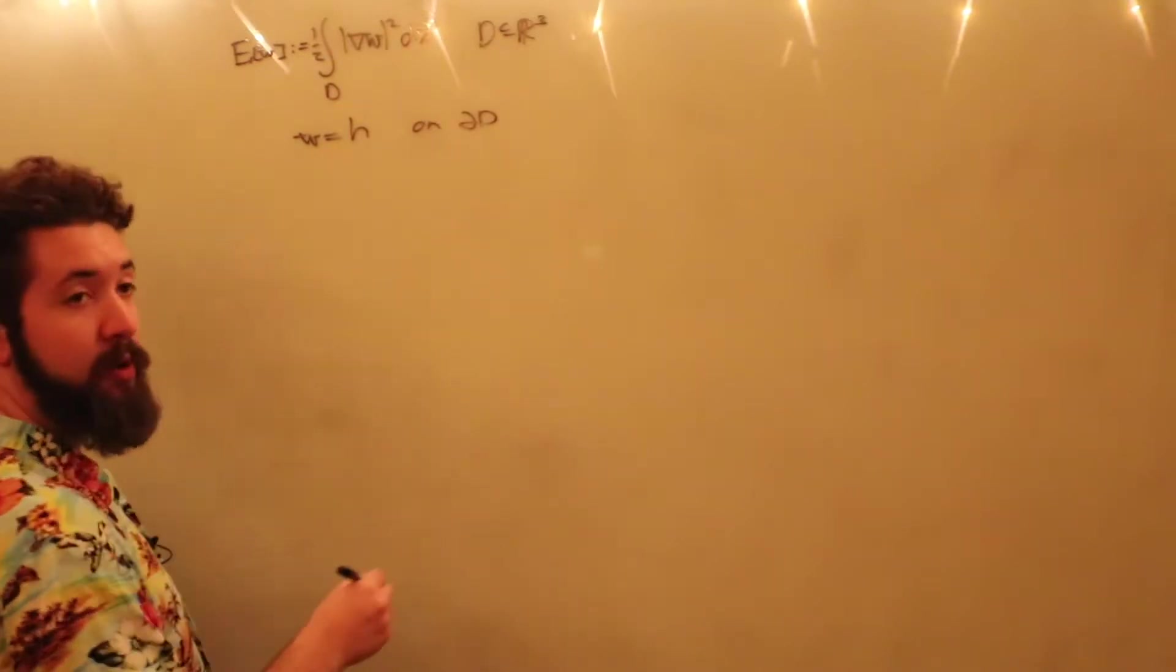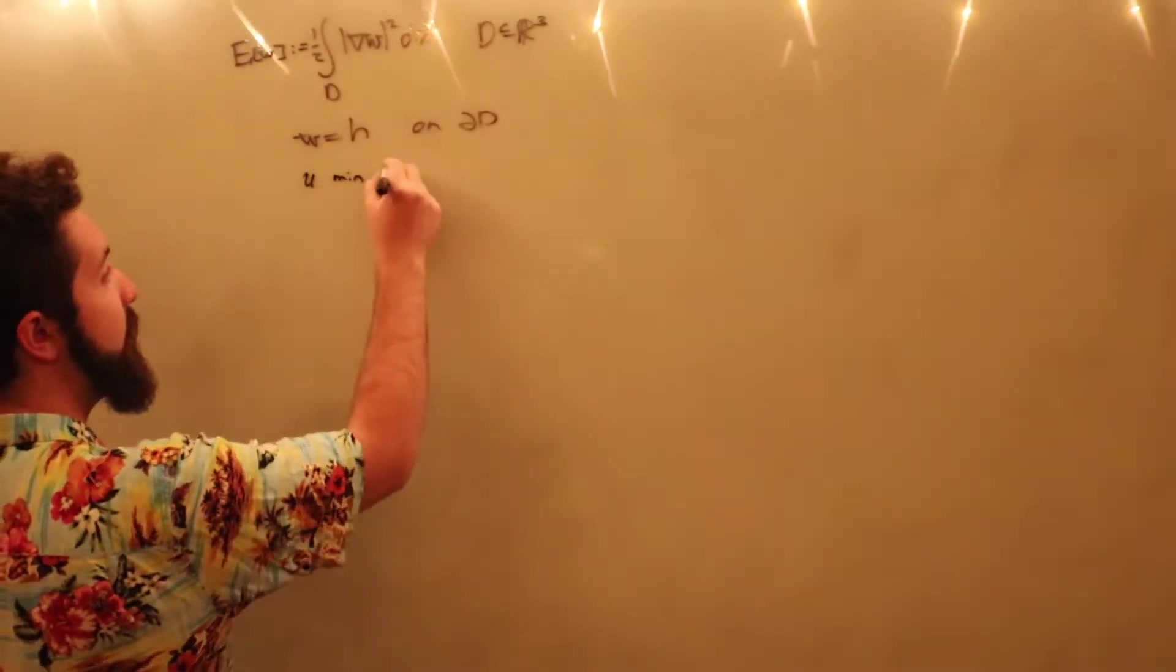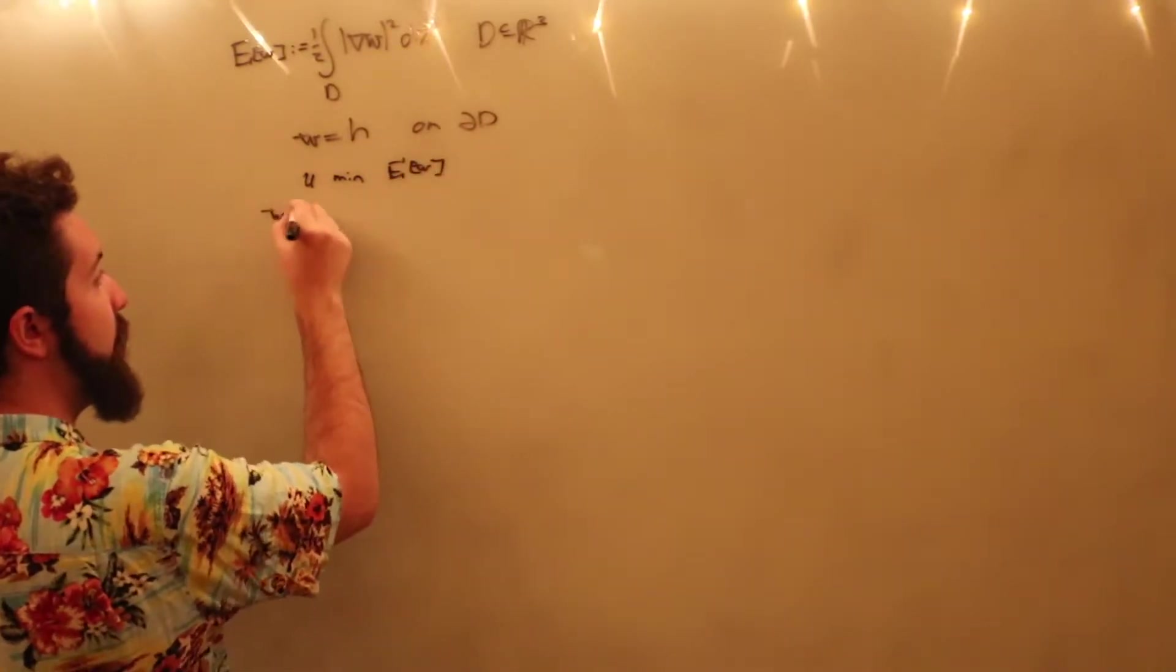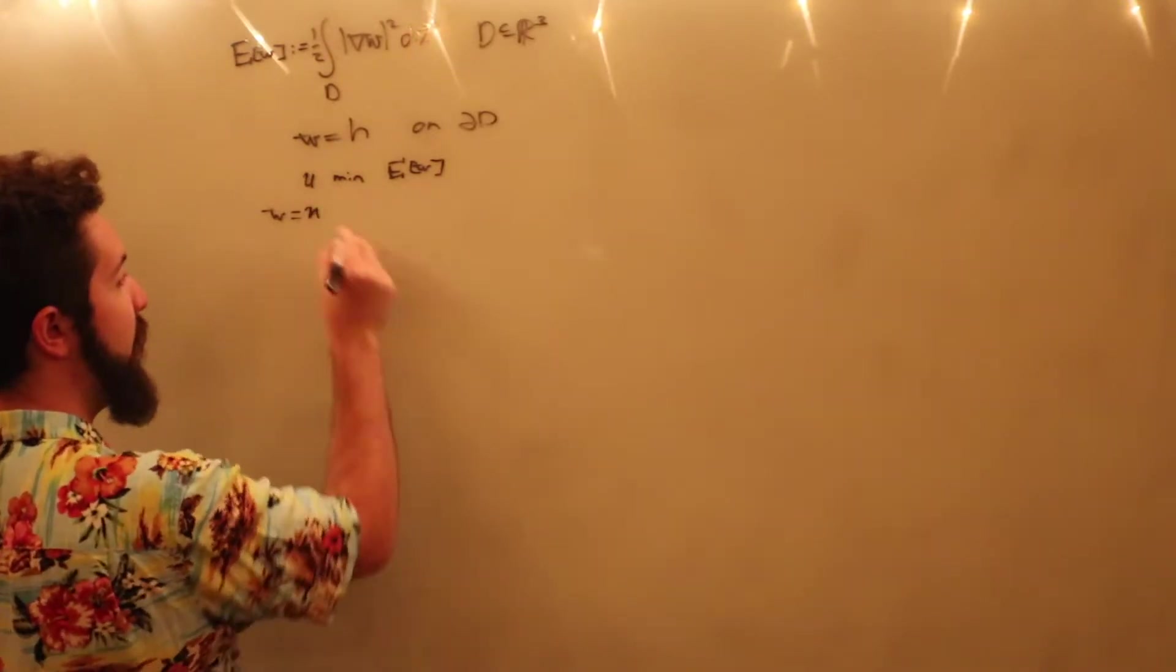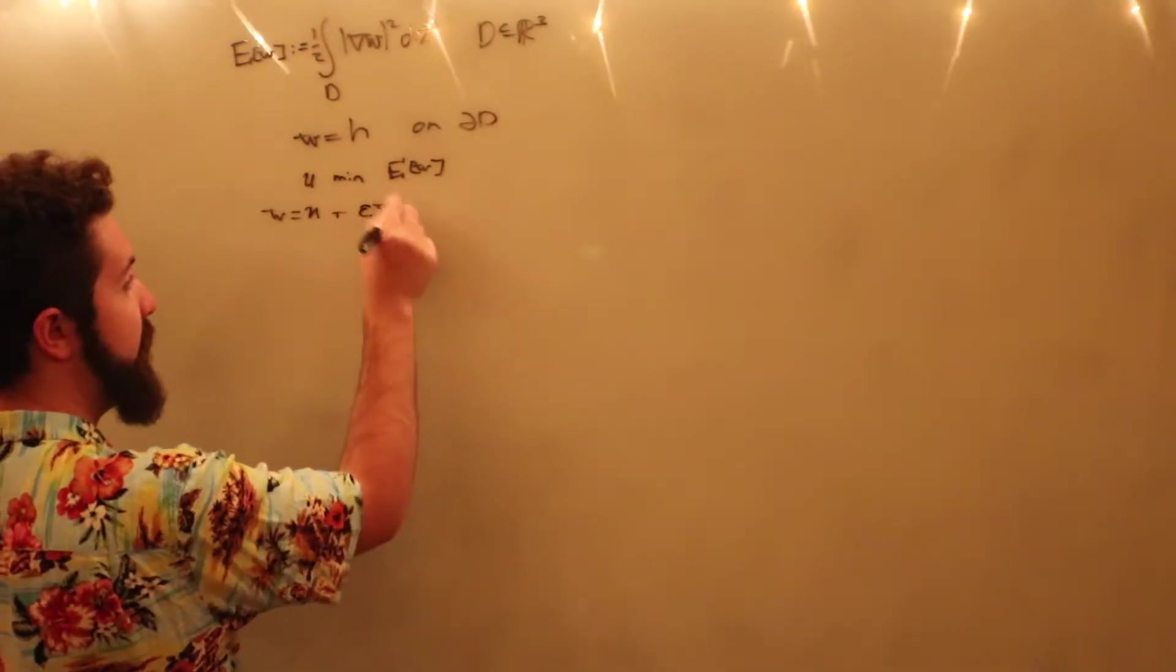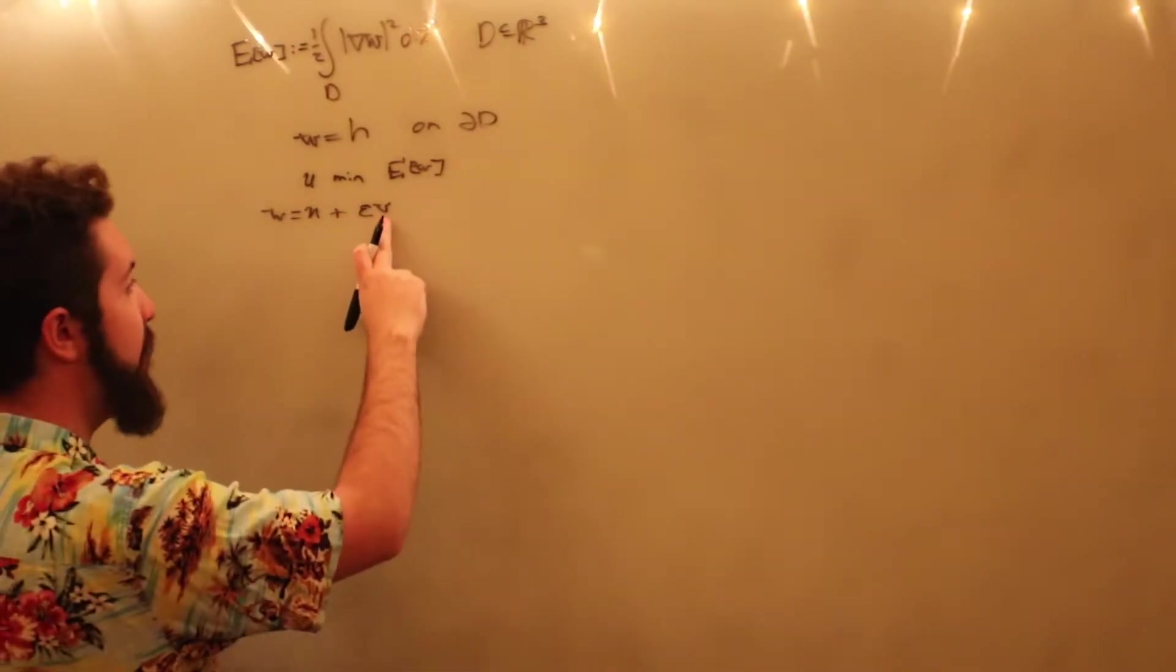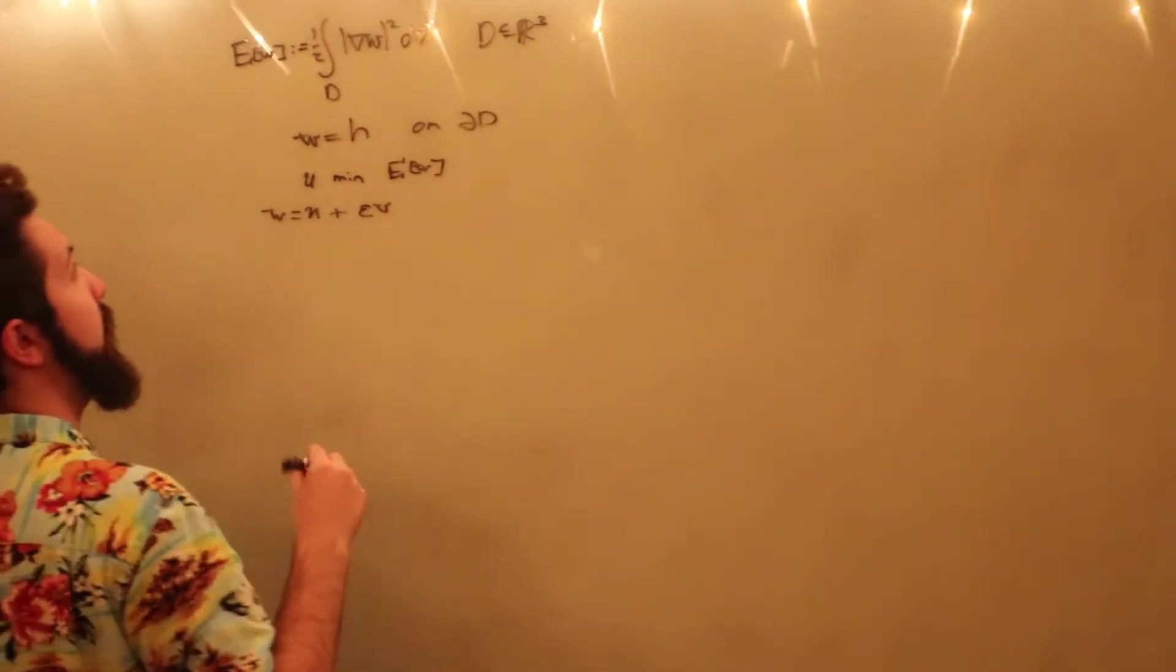And then, we also want to assume that the function, u, minimizes the energy, E of w. And we're going to let w be a function of this form, u, the minimum, plus epsilon times v. Where v is just, for now, an arbitrary function, and then epsilon is going to be sort of our independent variable here.